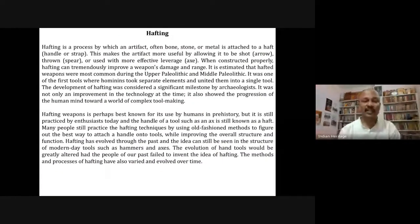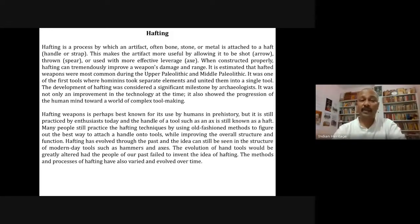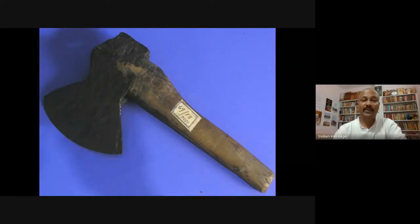Hafting is a process by which an artifact of bone, stone, or metal is attached to a haft, handle, or shaft. This makes the artifact more useful by allowing it to be shot as an arrow or thrown as a spear, using lever action. Hafting weapons is best known from prehistory but is still practiced today among nomadic and tribal communities. Methods and processes of hafting have varied and evolved over time.